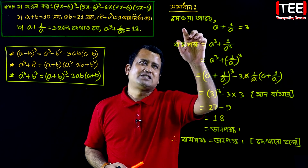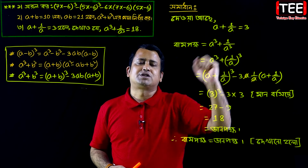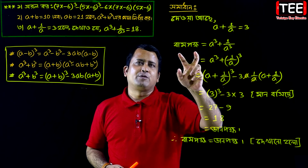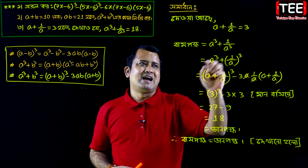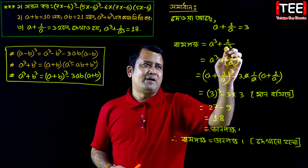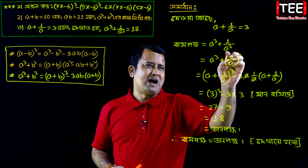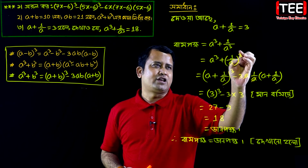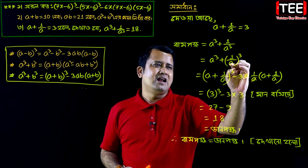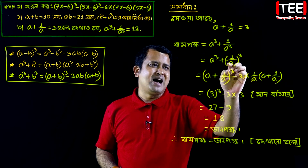So we have verified: given a plus 1 by a equal to 3, then a cube plus 1 by a cube equals 18. We applied a plus b whole cube minus 3ab into a plus b and the calculation is complete.